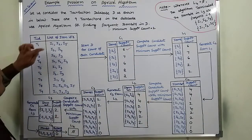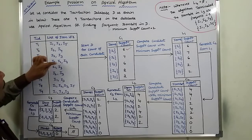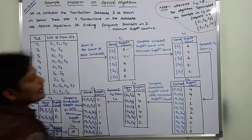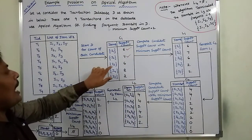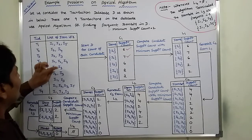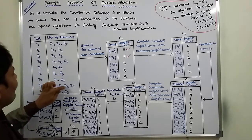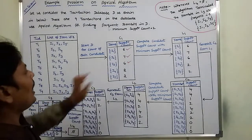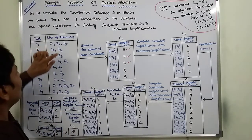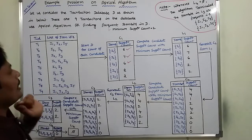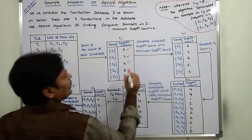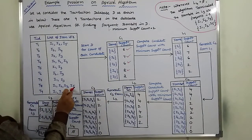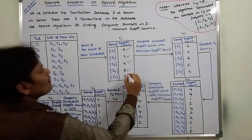Next, I2 is purchased 7 times. Next, I3 is purchased 6 times. Next, I4 is purchased 2 times. Next, I5 is purchased 2 times.